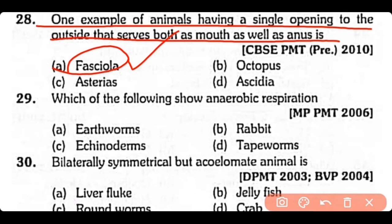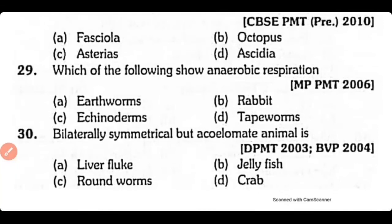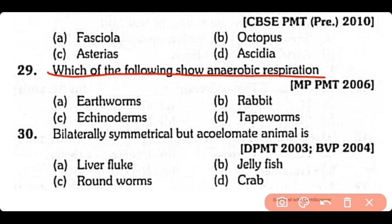Question no.29. Which of the following shows anaerobic respiration: earthworm, rabbit, echinoderms, or tapeworms? The correct answer is option D. Tapeworms show anaerobic respiration.